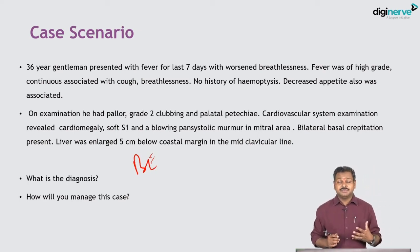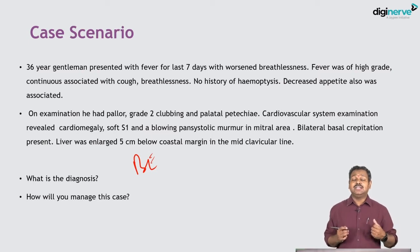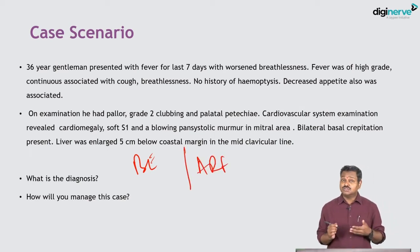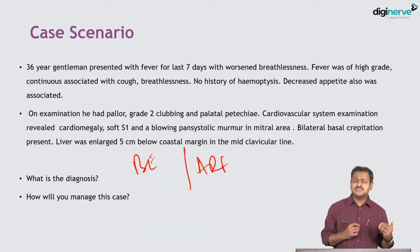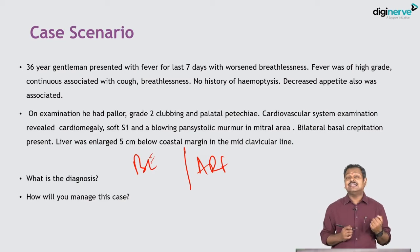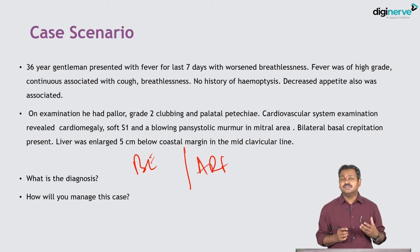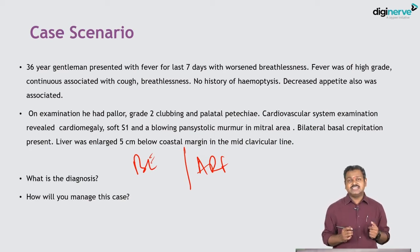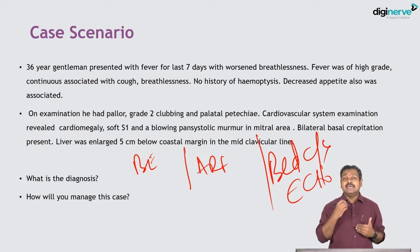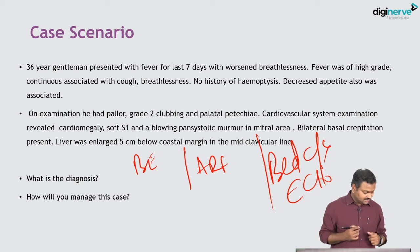Together these findings suggest bacterial endocarditis. We'll need to confirm with blood culture and echocardiography to demonstrate vegetations. The second differential is acute rheumatic fever, which must also be investigated. However, grade 2 clubbing and palatal petechiae are unlikely in acute rheumatic fever — they are more characteristic of infective endocarditis. The two key investigations are blood culture sensitivity and echocardiography.